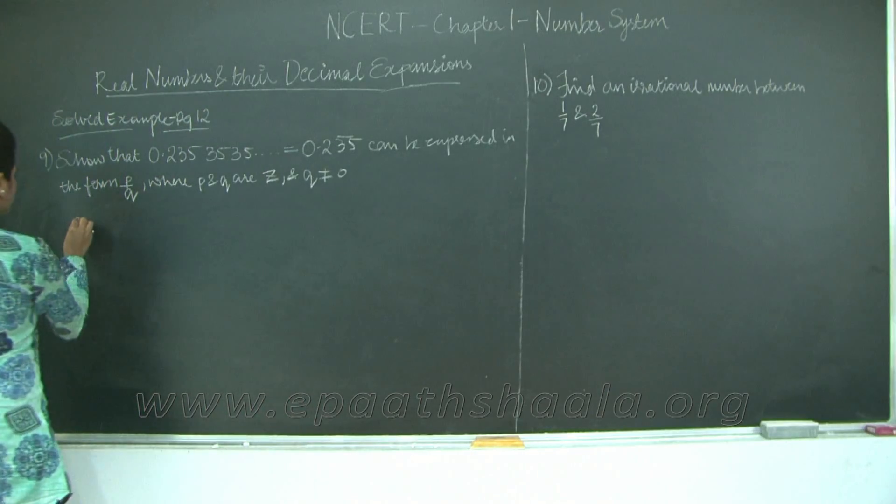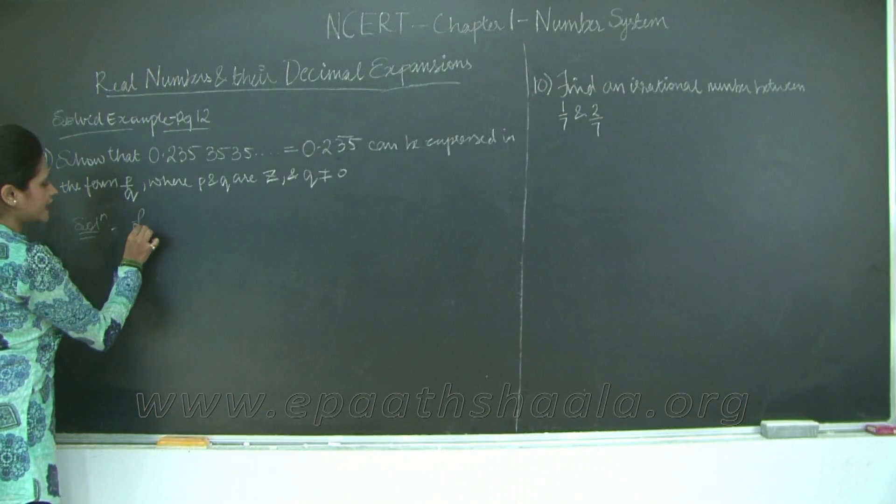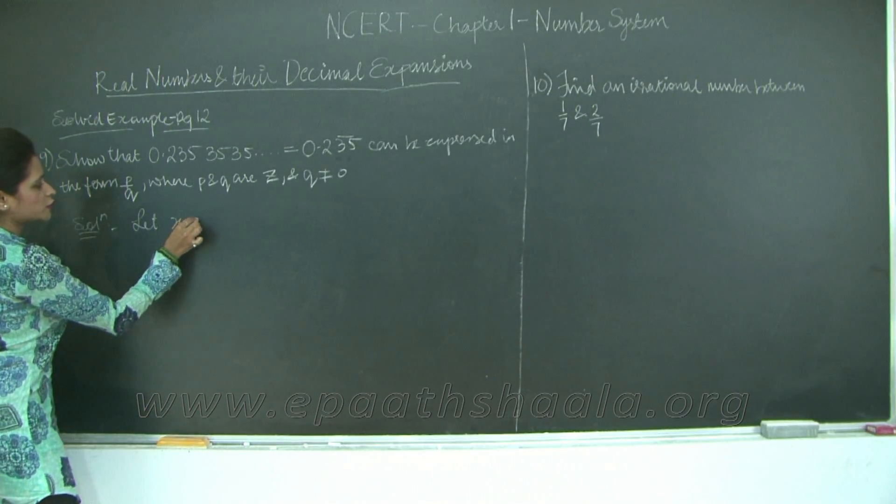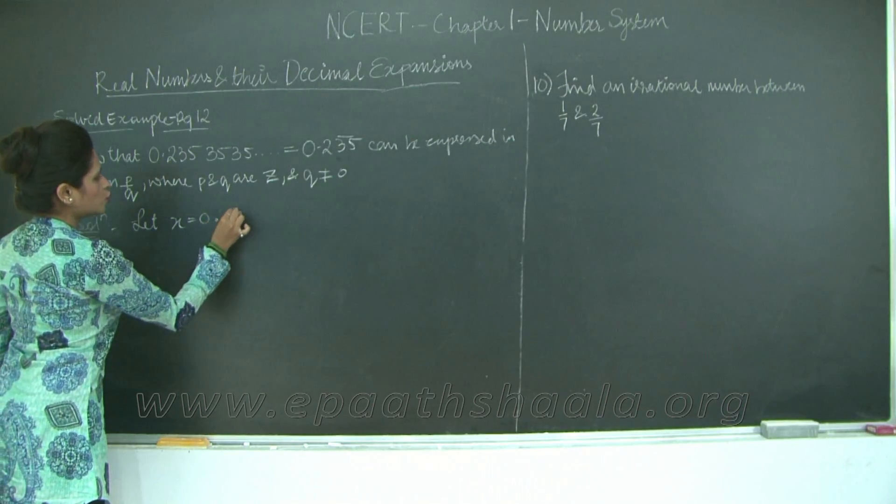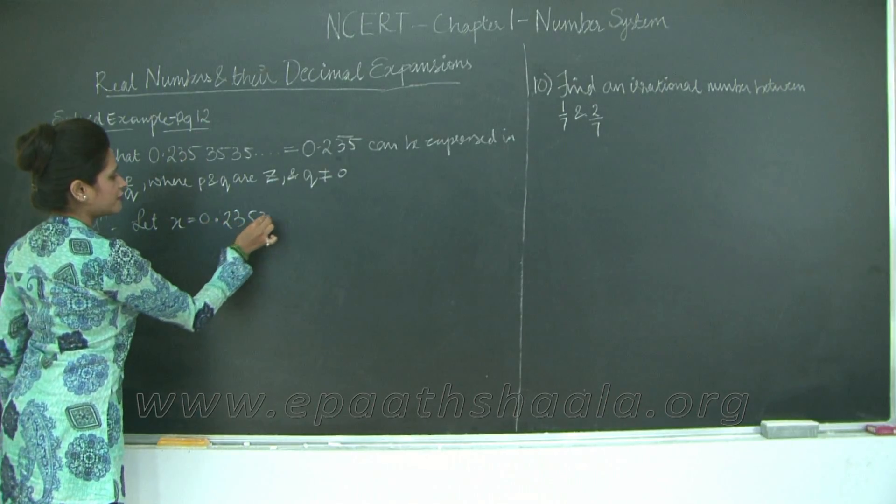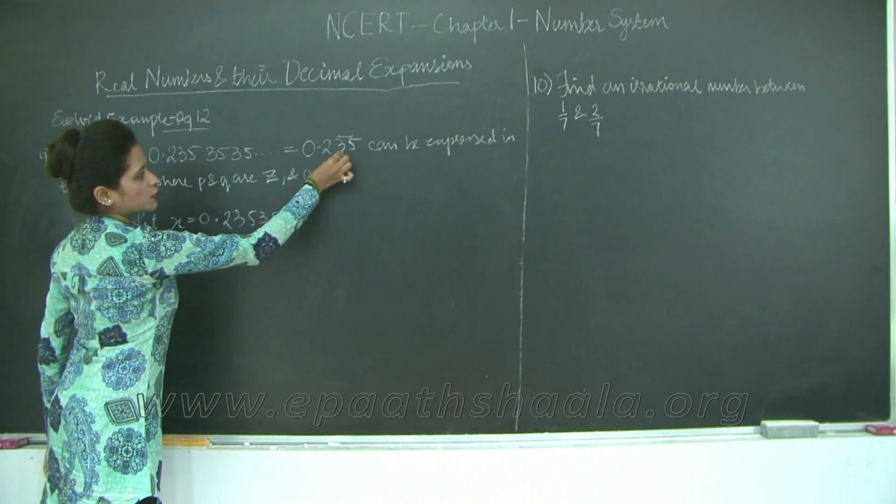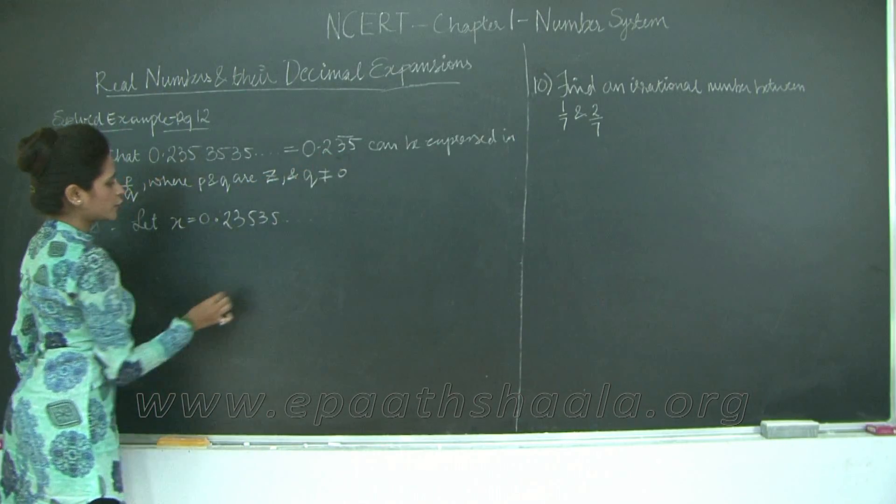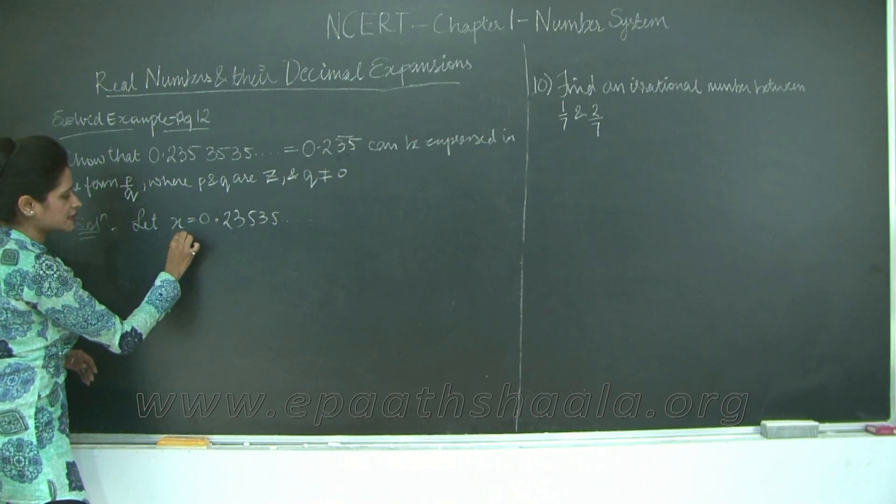Solution. Let x be equal to 0.23535 and so on. Now two numbers are repeating, which is 3 and 5. So I am going to multiply both sides with 100 because two digits are repeating after the decimal.